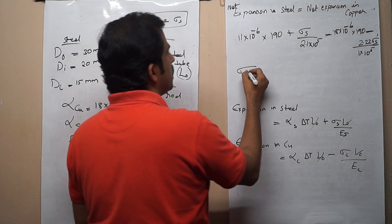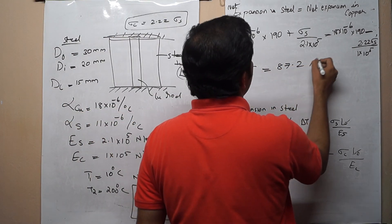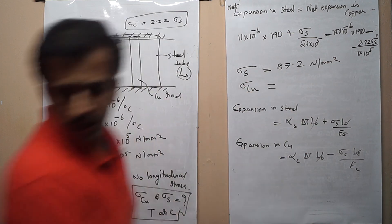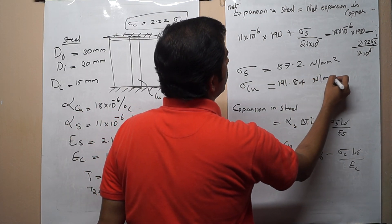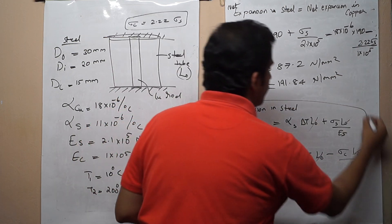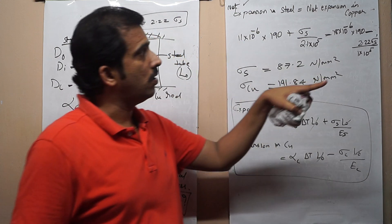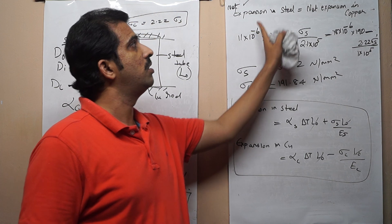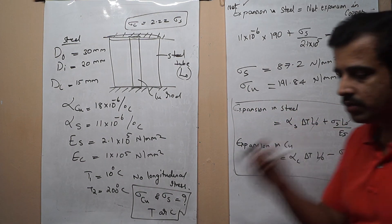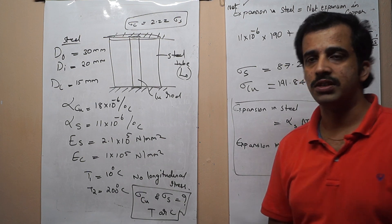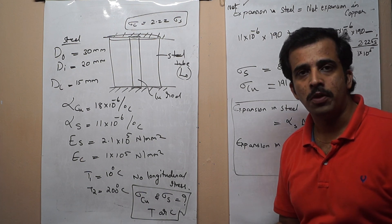On solving, we get σ_steel = 87.2 N/mm² (tensile) and σ_copper = 191.84 N/mm² (compressive). This is the solution to the problem. The two key inferences are: first, load on steel equals load on copper; second, net expansion in steel equals net expansion in copper. Using these two inferences we solve composite thermal stress problems. Thank you.